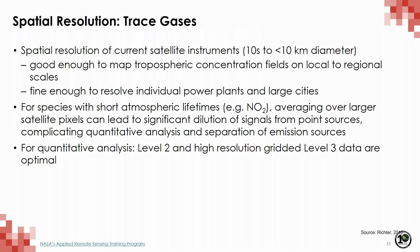The current spatial resolution of trace gas measurements is on the order of tens of kilometers. These resolutions are good enough to map tropospheric concentration fields on local to regional scales, but are also fine enough to resolve sources like individual power plants and large cities. For species with short atmospheric lifetimes like NO2, averaging over these larger satellite pixels can lead to significant dilution of signals from point sources, which can complicate quantitative analysis and separation of emission sources. So we're always looking for higher and higher spatial resolutions. Higher spatial resolution would also improve cloud clearing techniques, leading to more accurate retrievals and increasing the likelihood of being able to see between the clouds.